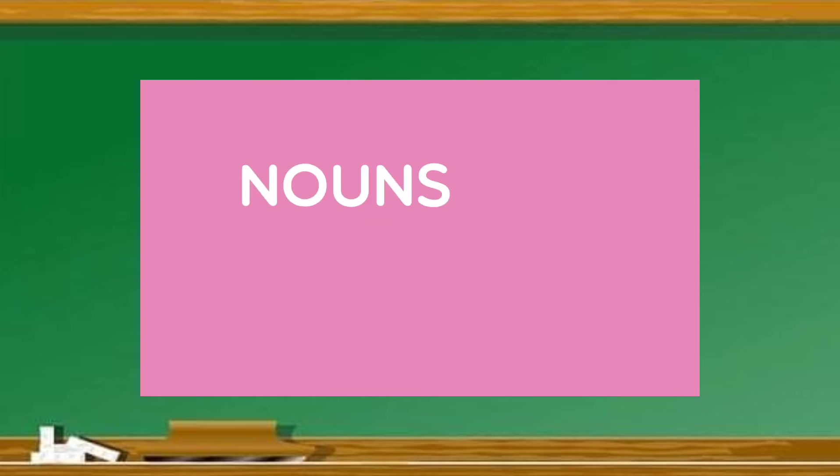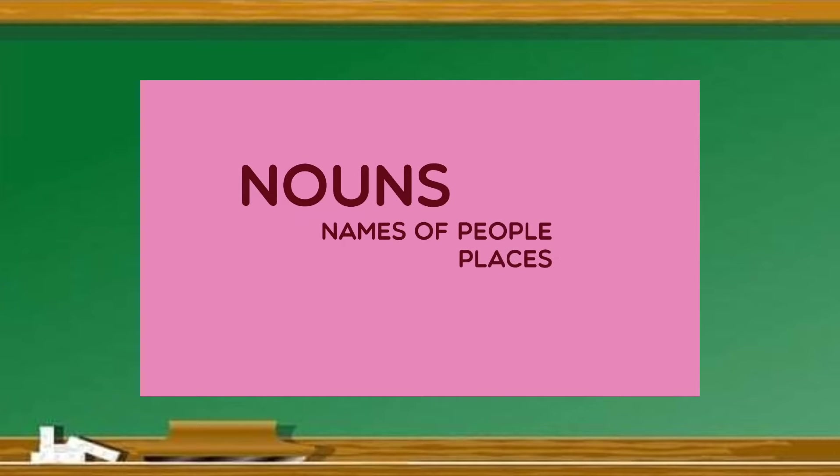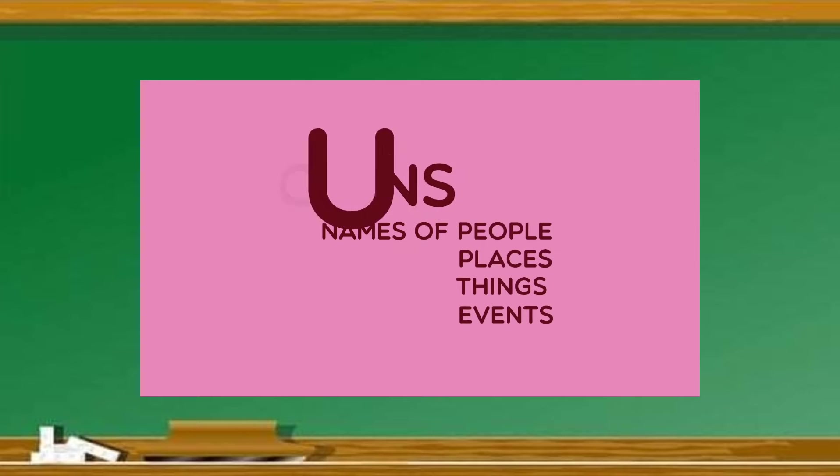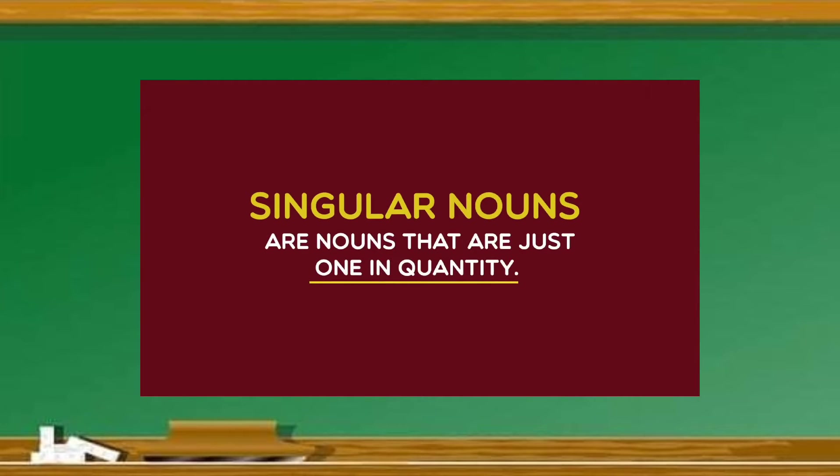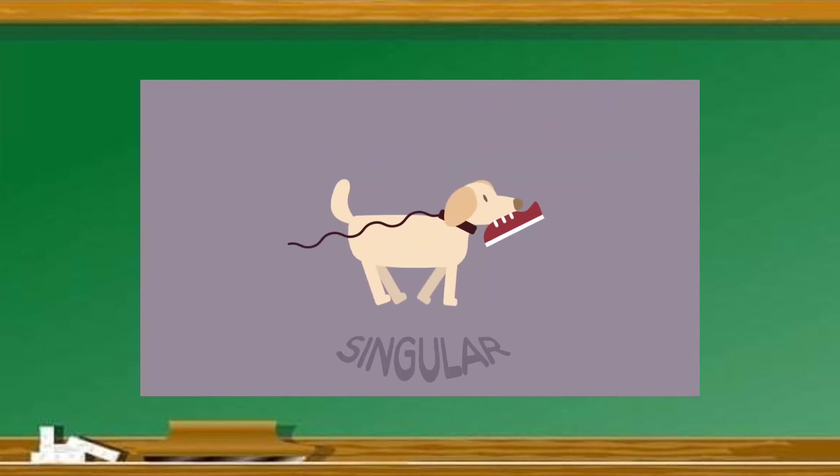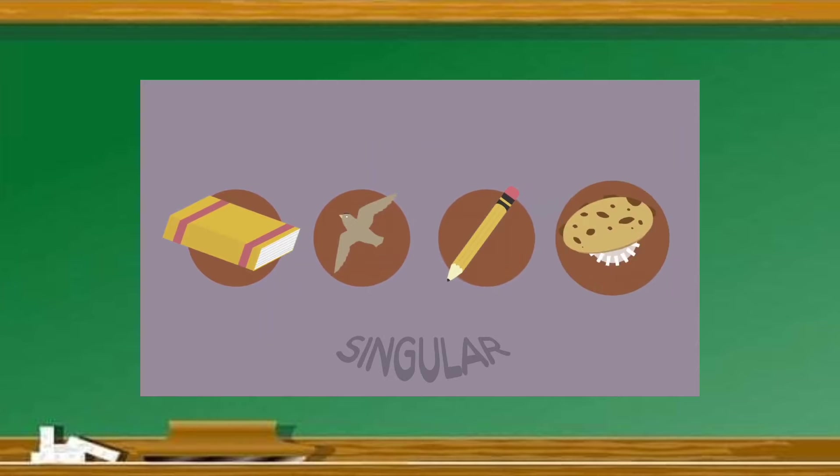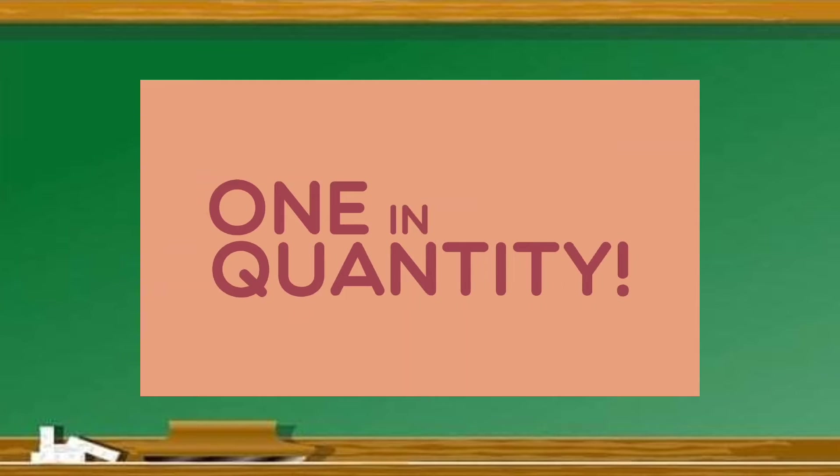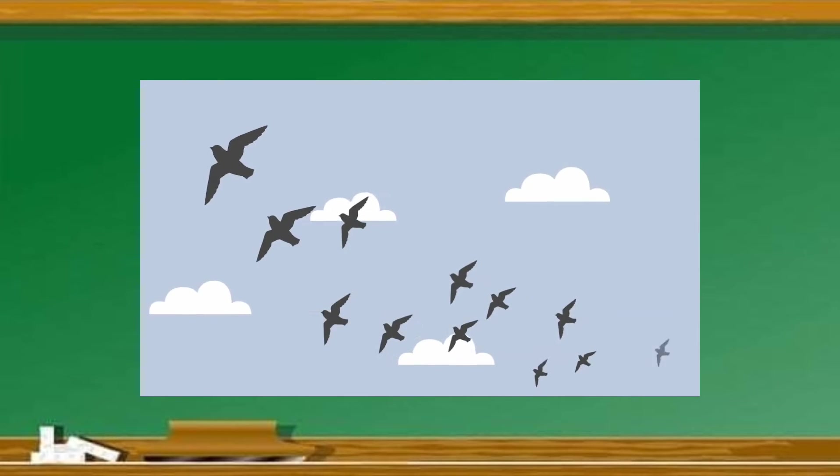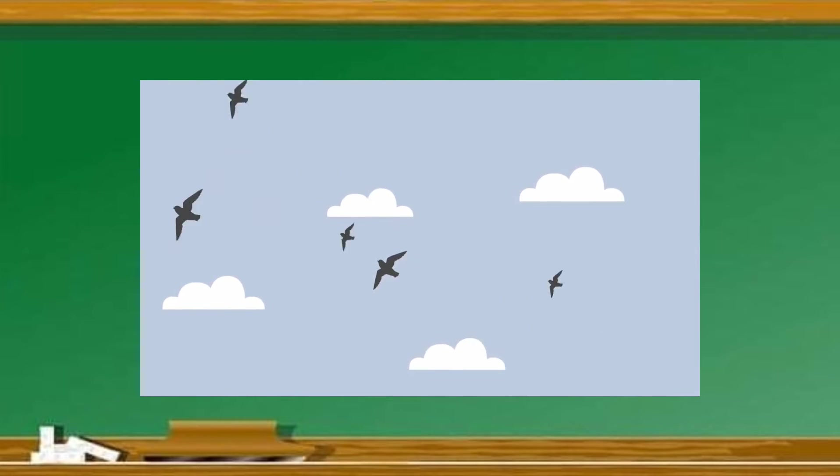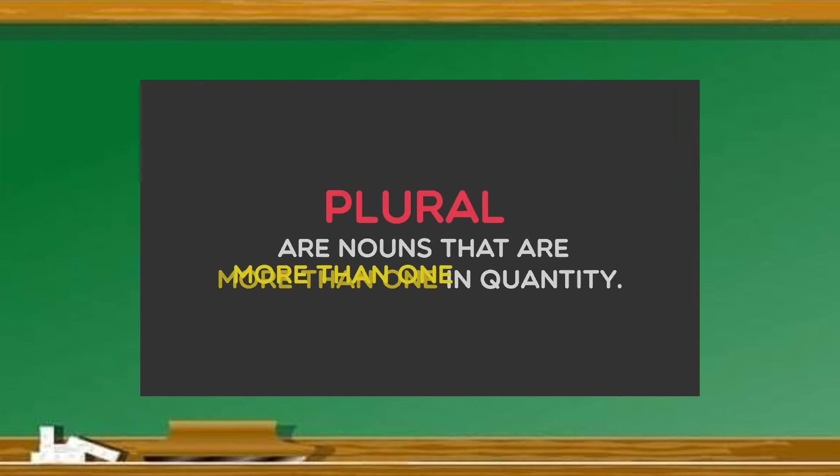We already know that nouns are the names of people, places, things, and events. Now, let's learn how to identify singular and plural nouns. Singular nouns are nouns that are just one in quantity. One donut is singular. One dog is singular. One person is singular. One book, one bird, one pencil, one cookie. Anything that is just one in quantity is singular. But what if there are more than one? Nouns that are two or more are called plural nouns.